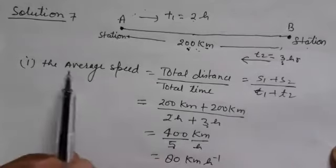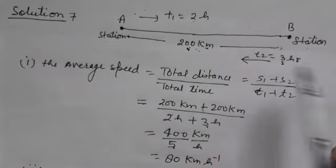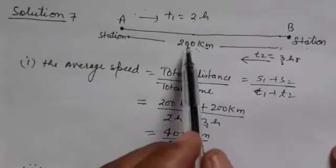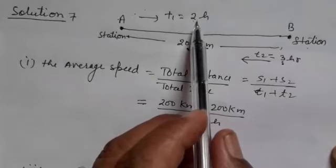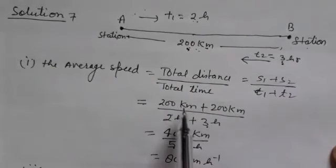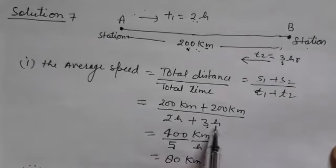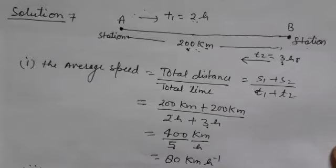We calculate average speed as total distance divided by total time. S1 is 200 km and S2 is 200 km. T1 is 2 hours and T2 is 3 hours. So average speed equals (200 plus 200) divided by (2 plus 3) equals 400 divided by 5, which gives 80 km per hour.